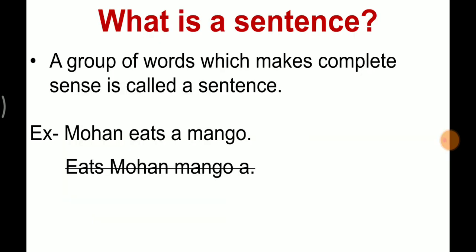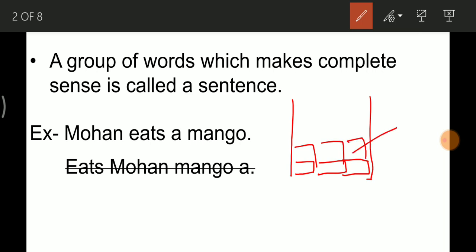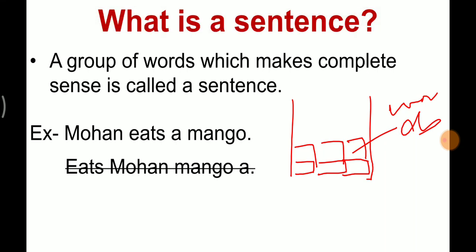First of all, we need to know what a sentence is. How does a house come together? If we want to make a house, there have to be some building blocks — bricks. Similarly, if we want to make a sentence, the building blocks are called words. Words are the sentence's building blocks. Just as bricks need to be arranged in a fixed pattern to make a house, words arranged in a proper pattern that makes complete sense are called a sentence.